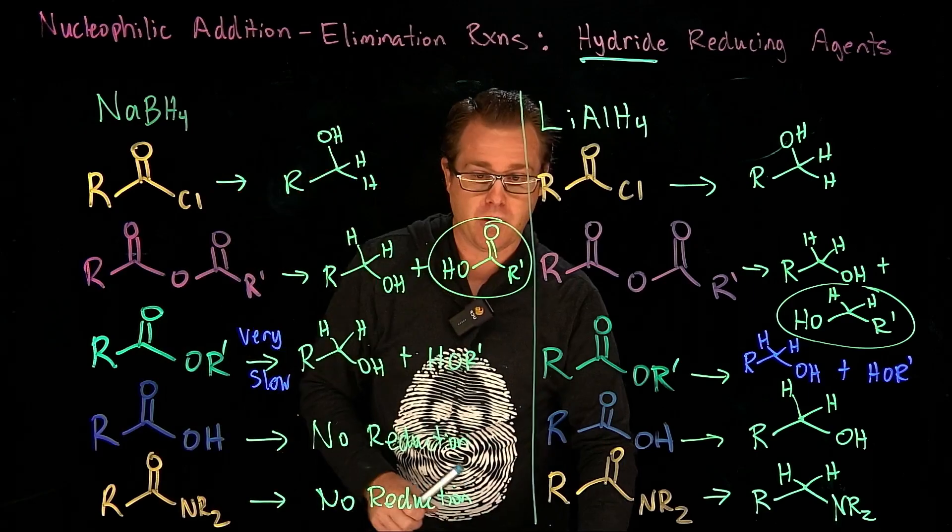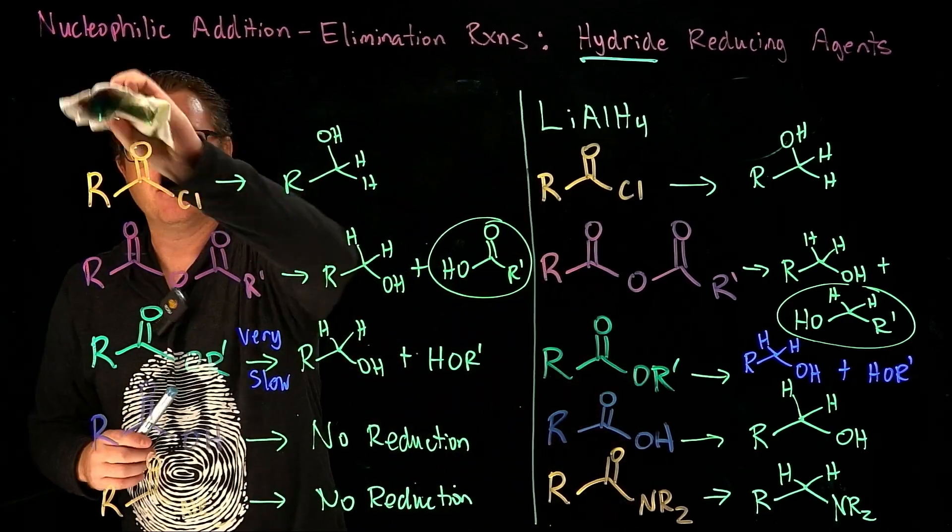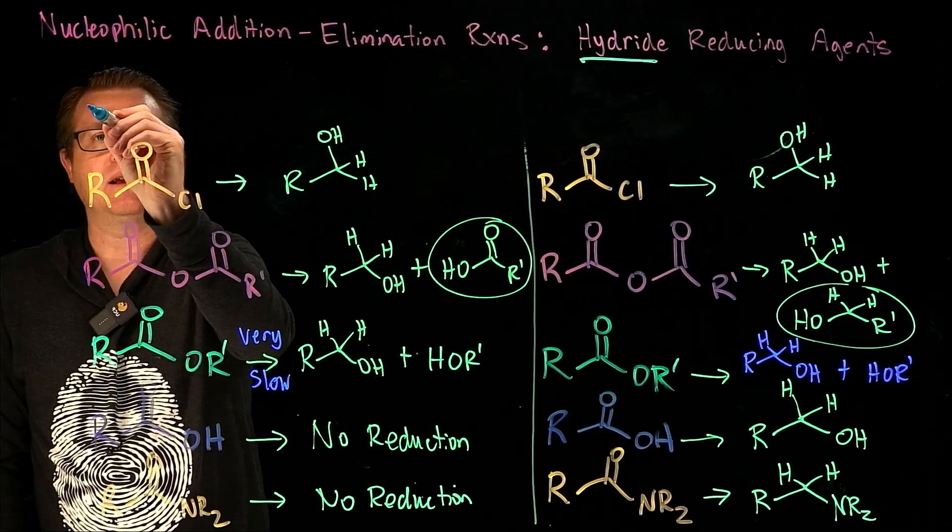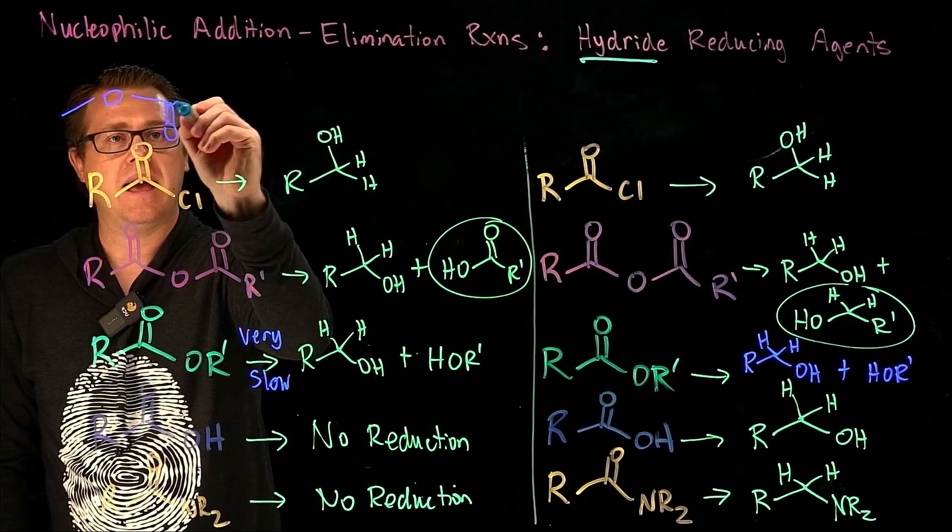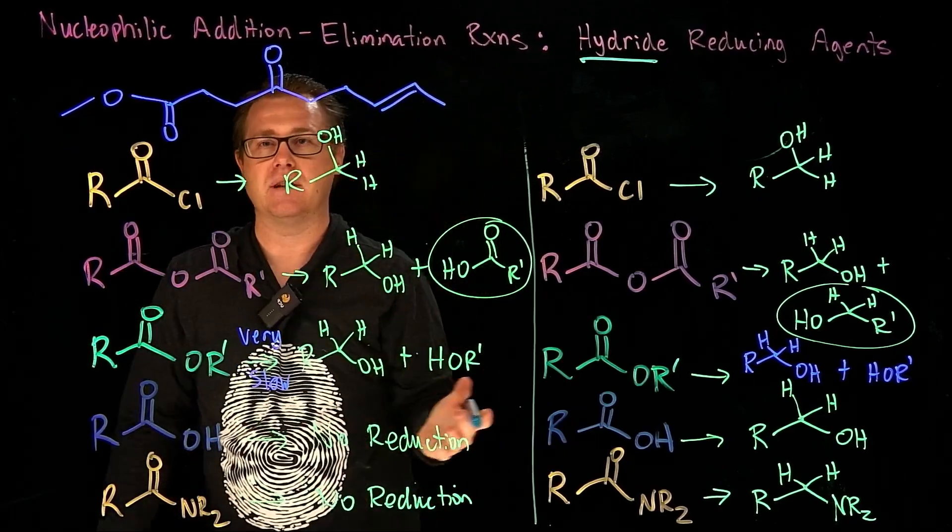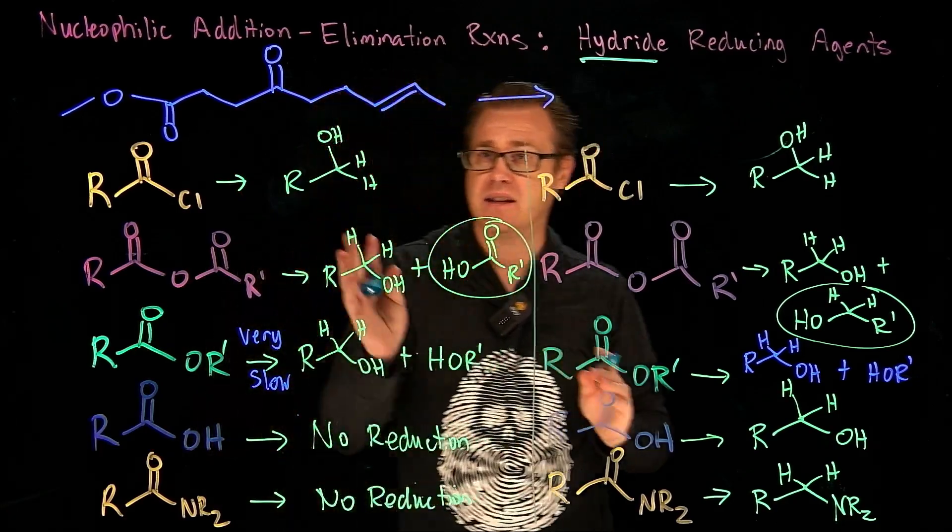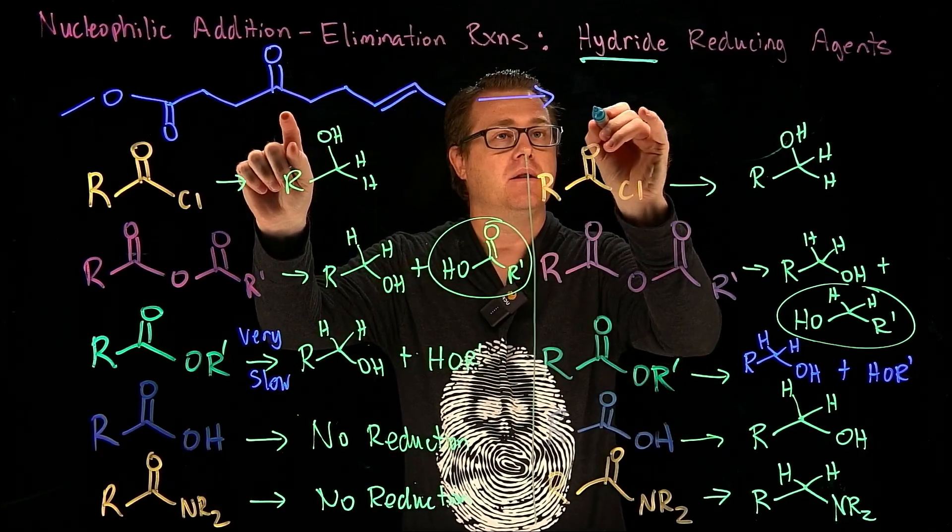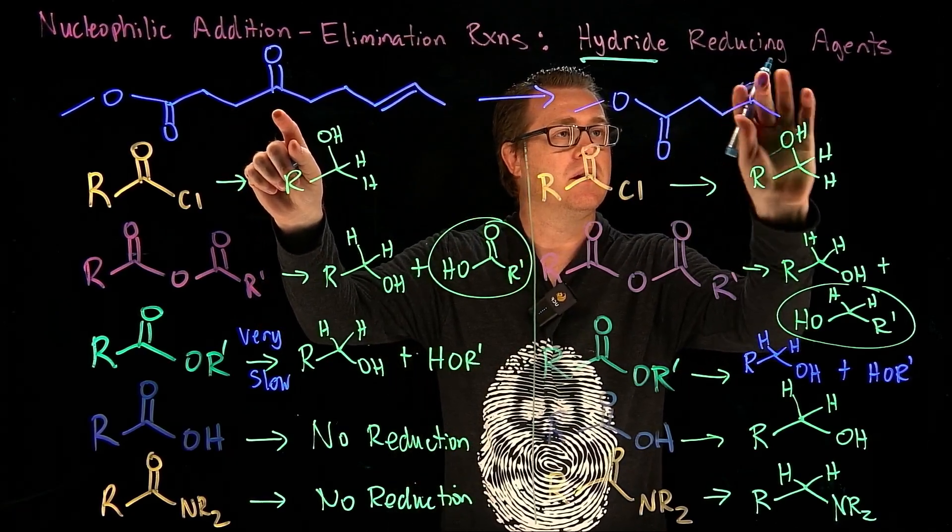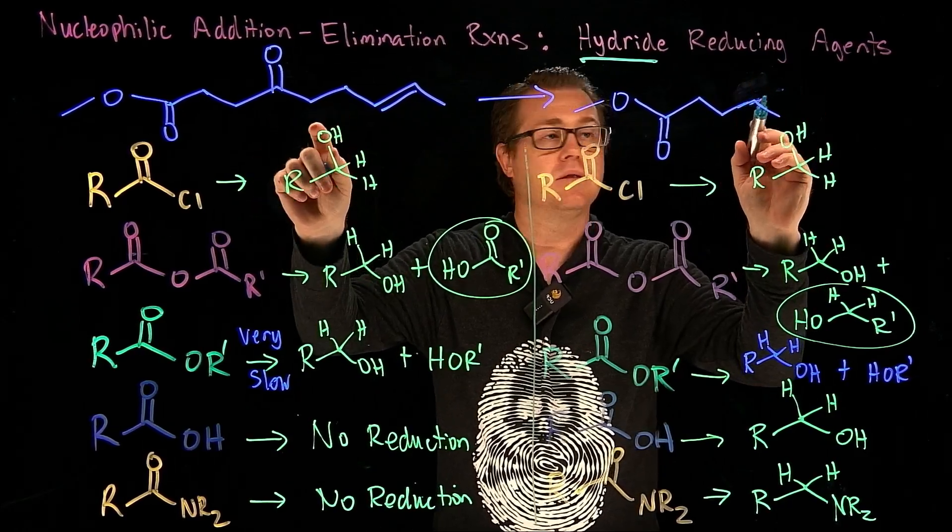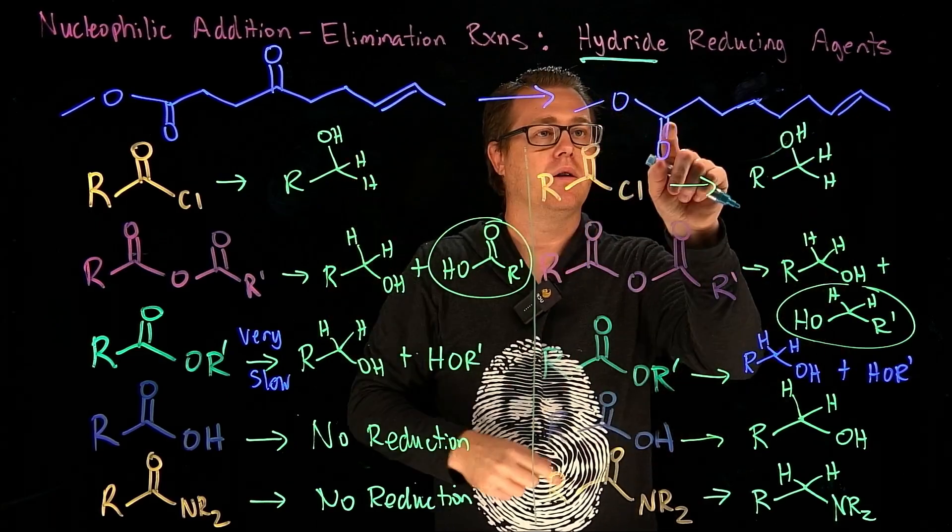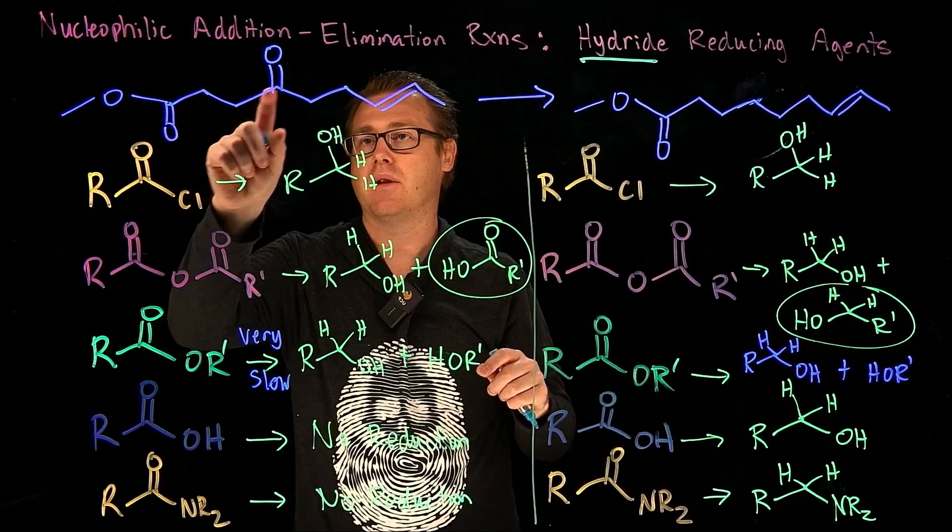So this is really cool. What if I had - let's say I had an ester, and a ketone right there, and an alkene. And I want to selectively reduce only the ketone. So I want a product that looks like this. [counting carbons to verify structure]